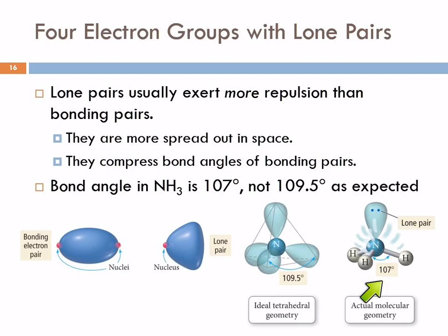So if I asked you what the bond angle for hydrogen-nitrogen-hydrogen is on ammonia, I would not expect you to know that it's 107, but I would expect you to be able to tell me it's less than 109.5, because it's going to be squished because of the extra repulsive lone pair.